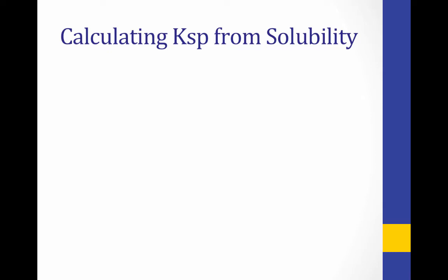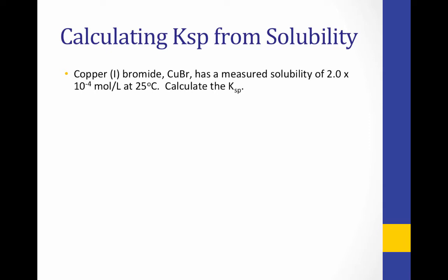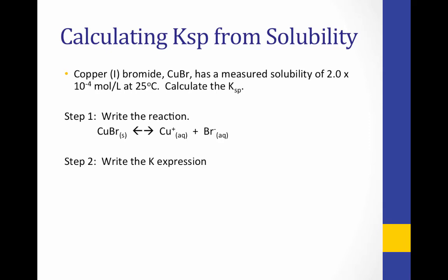We can use solubility data to calculate the KSP for a given salt. Consider this problem: copper bromide has a solubility of 2.0 × 10⁻⁴ moles per liter at 25°C. In other words, 2.0 × 10⁻⁴ moles of copper bromide will dissolve in each liter of water. First, we write the dissociation equation — copper bromide dissociates to form one mole of copper and one mole of bromide. Then we write our K expression; since there are no coefficients, we have exponents of one, and again no denominator because our reactant is a solid.